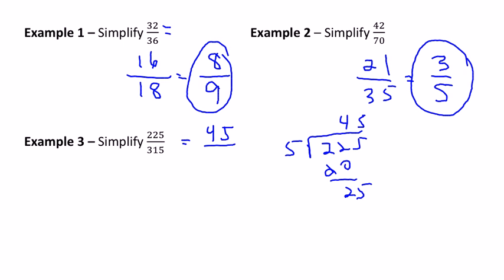And then you've got to do 315 divided by 5. 5 goes into 31 six times and 15 three times, so it's going to be 63.